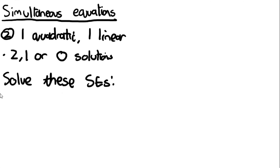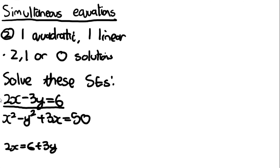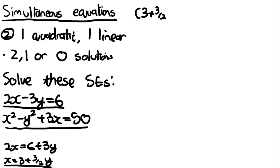The specification specifically says it could put both variables in the quadratic to the power of 2. For example: 2x − 3y = 6 and x² − y² + 3x = 50. The method is exactly the same — rearrange the linear equation to make x the subject: x = 3 + (3/2)y. Then substitute into the quadratic: (3 + (3/2)y)² − y² + 3(3 + (3/2)y) = 50.